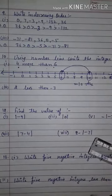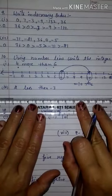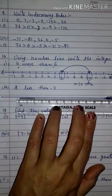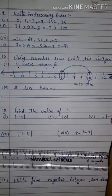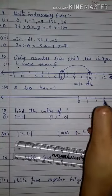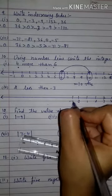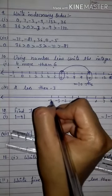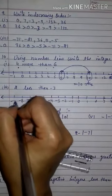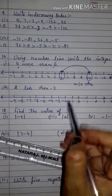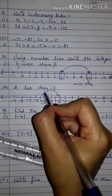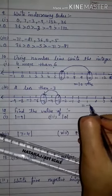We write the answer and also show it on the number line. For more, we move to the right-hand side. For less, we move to the left-hand side. 2 less than minus 3 — start from minus 3 and move two steps to the left. We reach minus 5. The answer is minus 5.